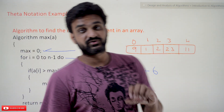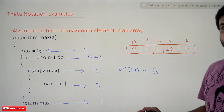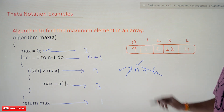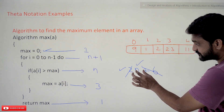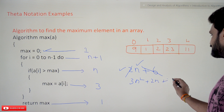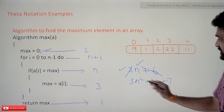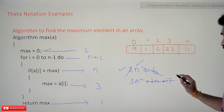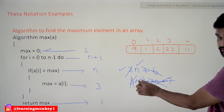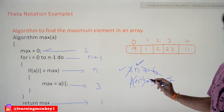From now on, wherever we get a time complexity expression, we are going to discard constant values and keep only the upper rate of growth — the dominant term. For example, if the equation is 3n² plus 2n plus 7, then n² is the highest term, so the time complexity is n². Applying the same logic here, from 2n plus 6 we discard constants and consider only n.